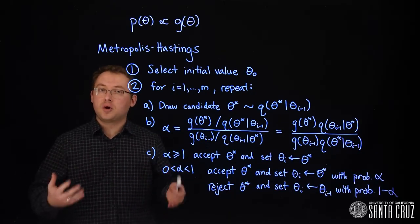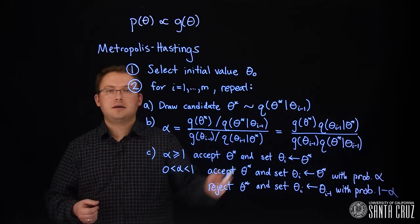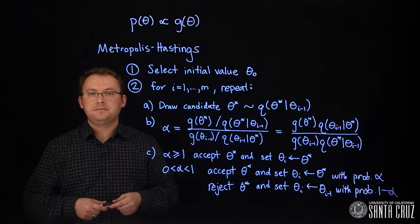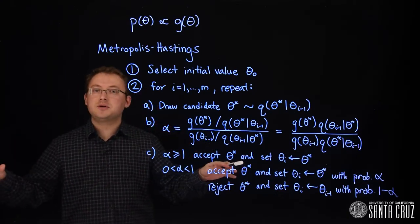For instance, it might be a normal distribution where the mean is our previous iteration theta i minus 1. Because the normal distribution is symmetric around its mean, this example comes with another really nice advantage.